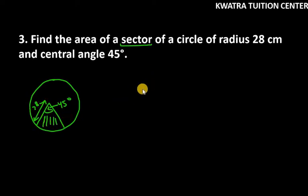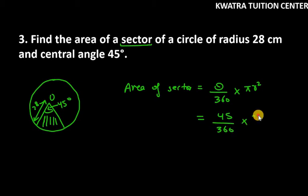This is very simple, you just have to use the formula of sector. Area of sector is given by theta over 360 into pi r square, so theta is 45, 360, pi is 22 over 7, r square is 28 into 28.